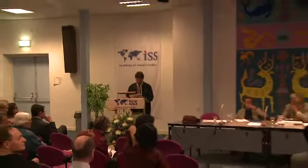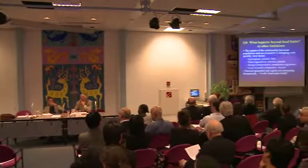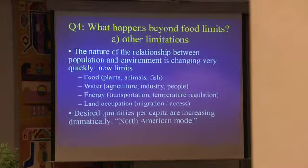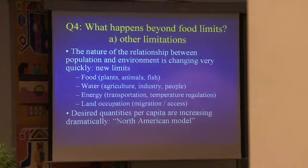The next question I would like to raise today is what happens beyond food limits. Malthus was focusing always on food, and all the societies he had studied had a major problem with food, whether it was in northern Europe, in Siberia, in the Americas, in Oceania, and everywhere. But the relationship between population and environment has been changing very quickly in the recent past as a result of the population explosion. There are new limits appearing now for plants, for land animals, and for fishes.